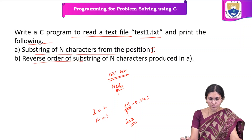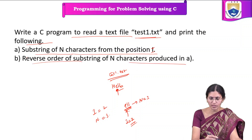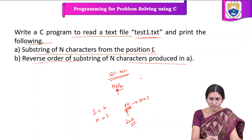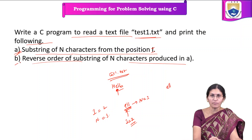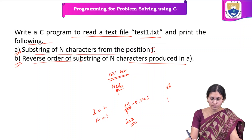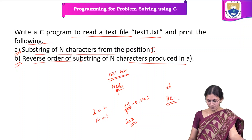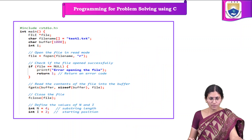The second part is to print the reverse order of the substring produced in part a. So if part a prints 'ell', then part b prints the reverse, which is 'lle'. This is straightforward. We will see the program now.